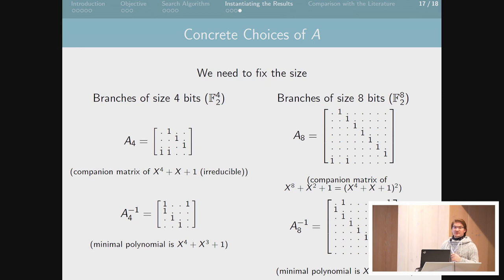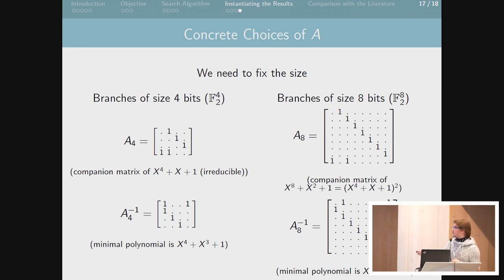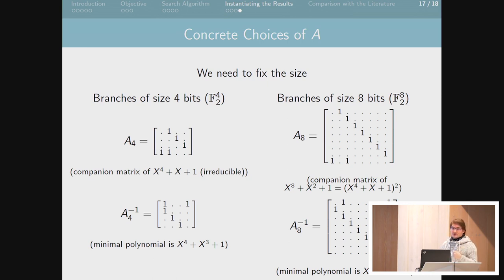At this point we need to fix the size of the words. All the rest of the time we had words on F2^n; now we need to fix N. We chose two sizes typical for S-boxes: four bits and eight bits. For all of them we instantiated using A4 — the companion matrix of an irreducible polynomial, exactly a finite field multiplication. For eight bits, we use the square of the polynomial here.